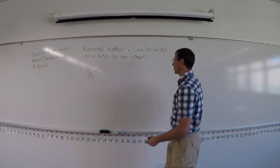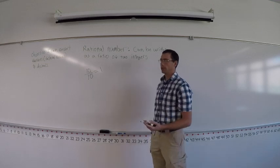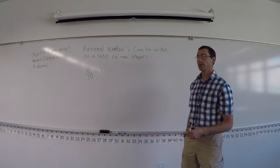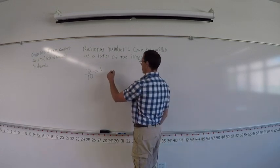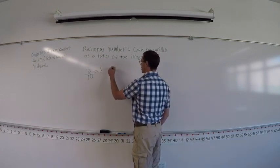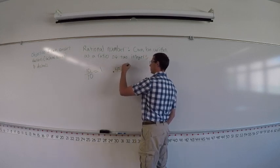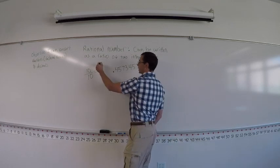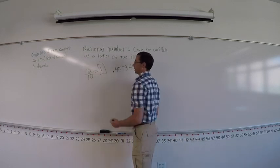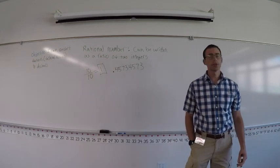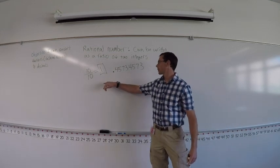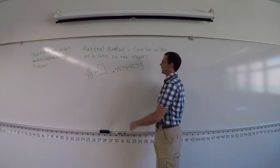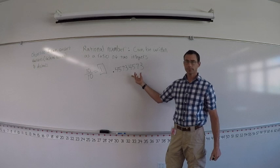So we looked at some rational numbers and how they look as decimals. How do we know if we just have the decimal — how do we know if it's rational or not? We know if it's an integer, then it's a rational number. But what if we have a decimal, something like 4573 — is that a rational number?